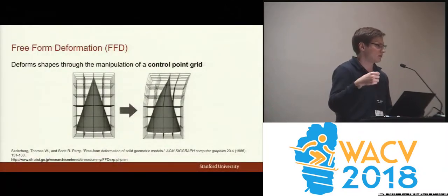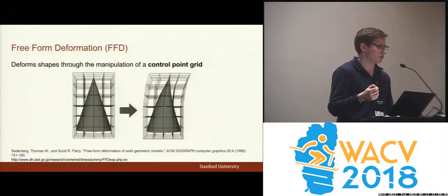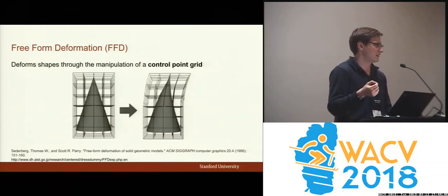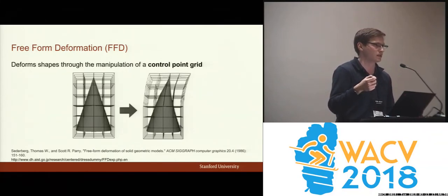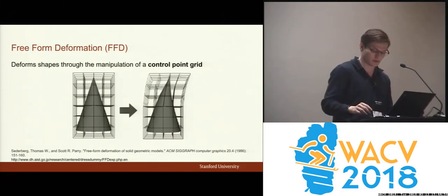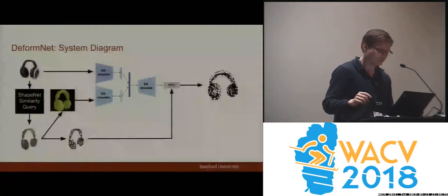Briefly, to describe how deformation is done: we are using a very old idea from computer graphics known as freeform deformation. Basically, you embed your object in a grid of points, and as you move the points around, it also deforms the object correspondingly.